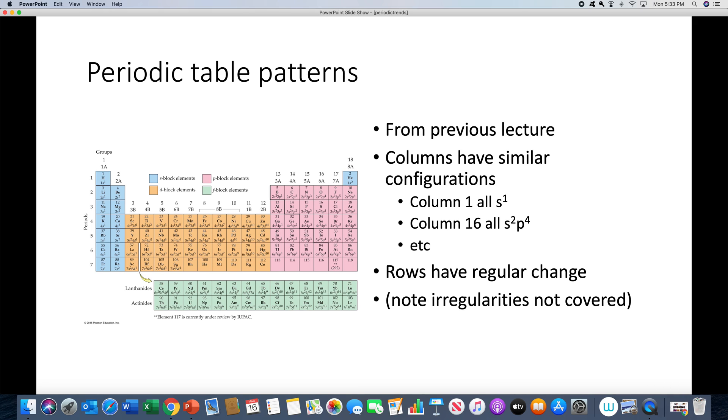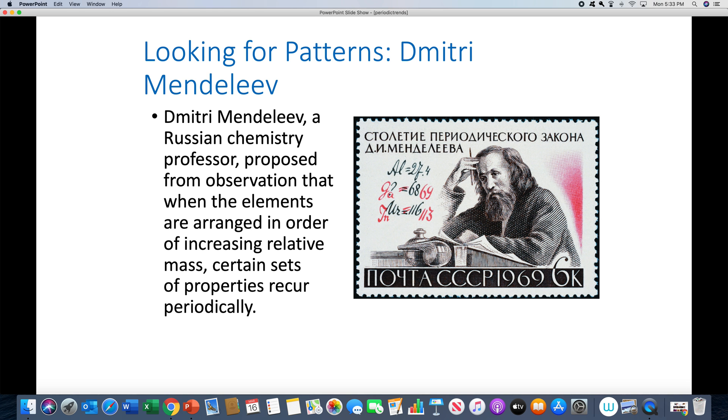You might notice in this particular periodic table that there's some configurations that don't fit the pattern. In CHEM 152, everything is going to fit the pattern. What's really interesting is that the periodic table was developed way before we learned anything about electron configurations, and a scientist named Dmitry Mendeleev was credited with putting it together in its current form.